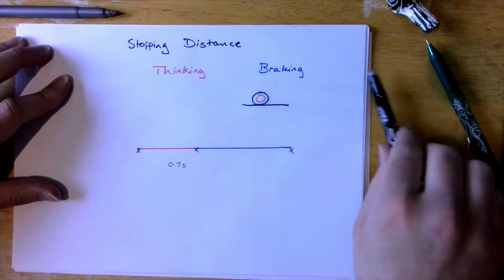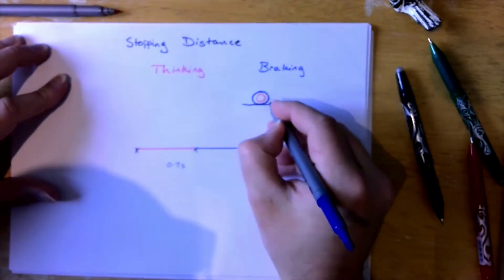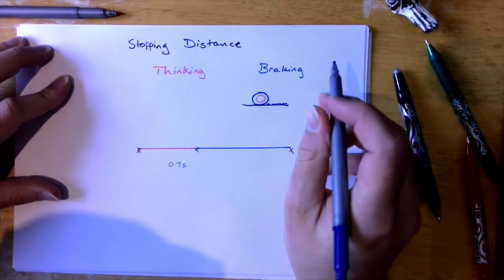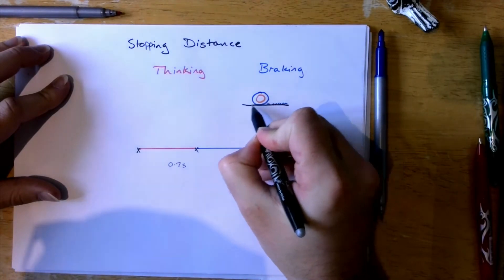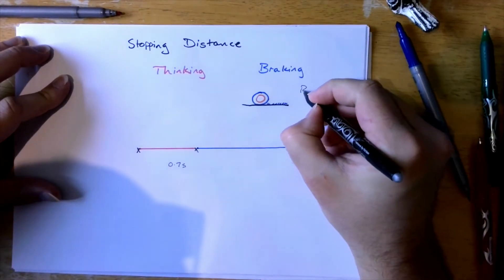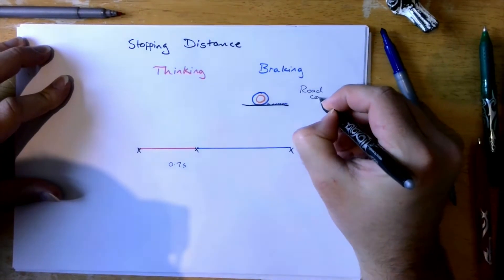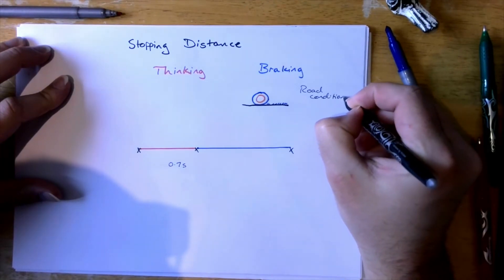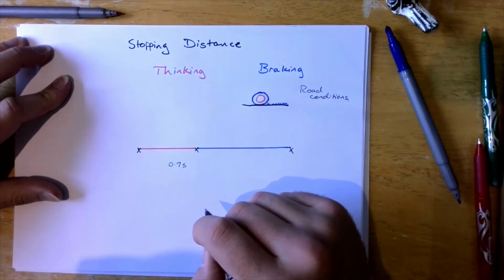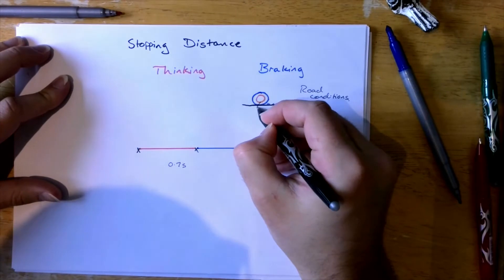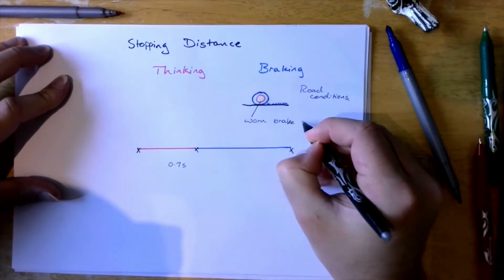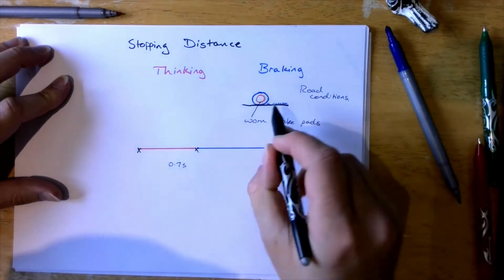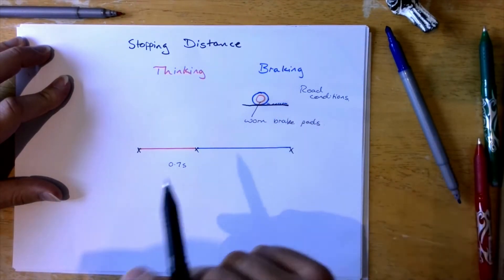Well if we put some ice or some water on the road that will act as a lubricant and will reduce the friction between the tire and the road. So we can say that road conditions will affect how quickly my braking distance or how small my braking distance will be. If you have an old car you may have worn pads because the friction will break it down ever so slightly over time.